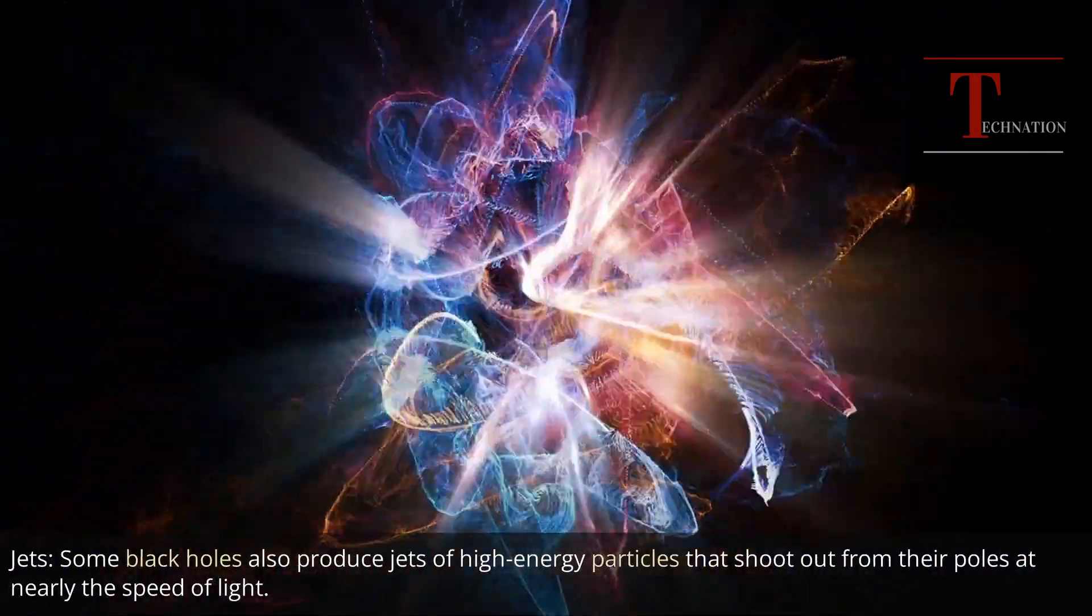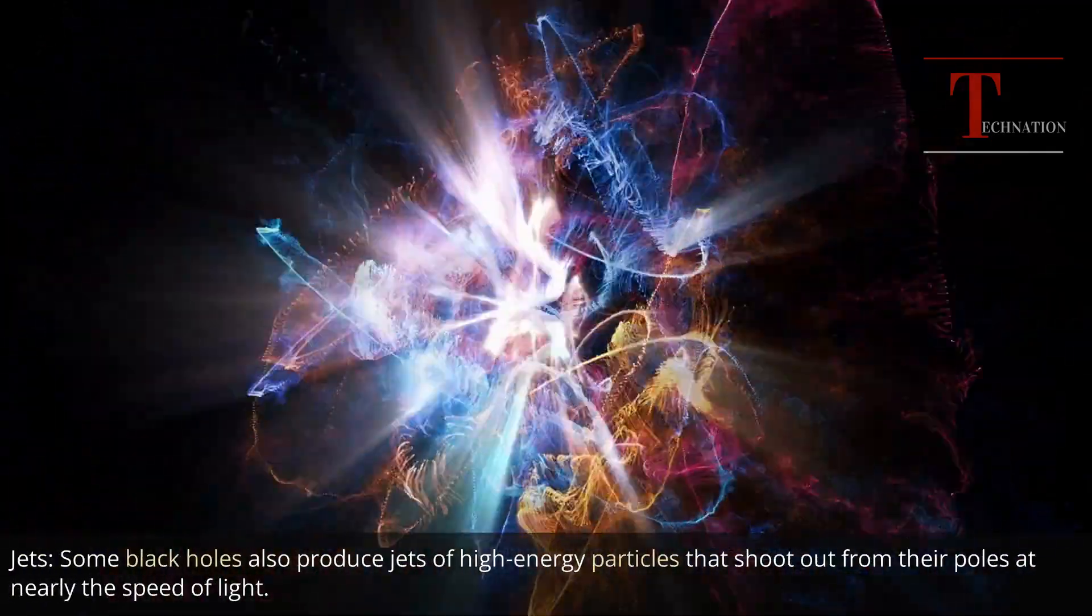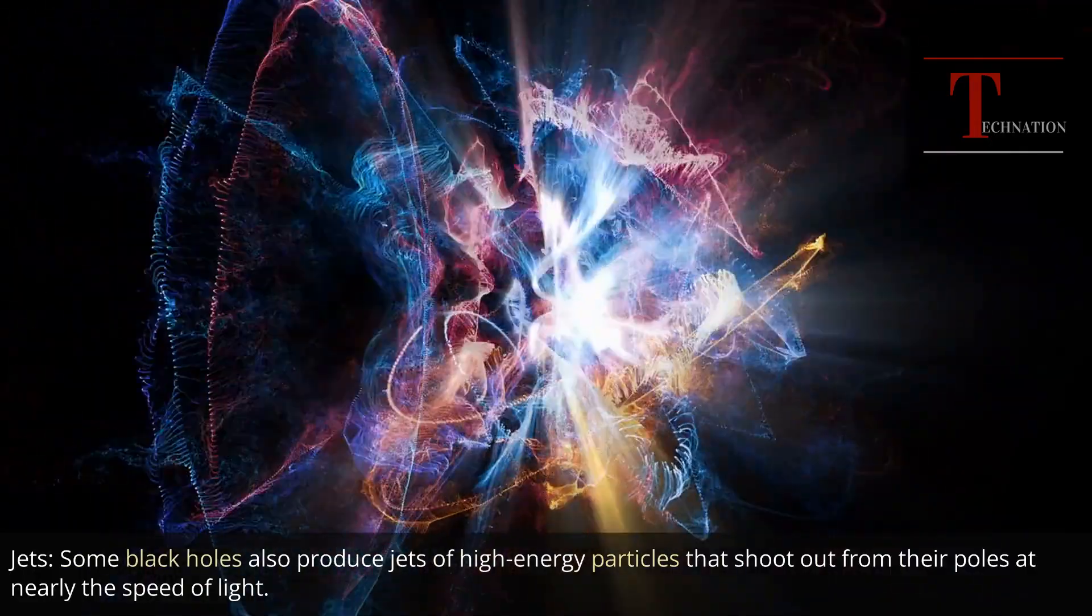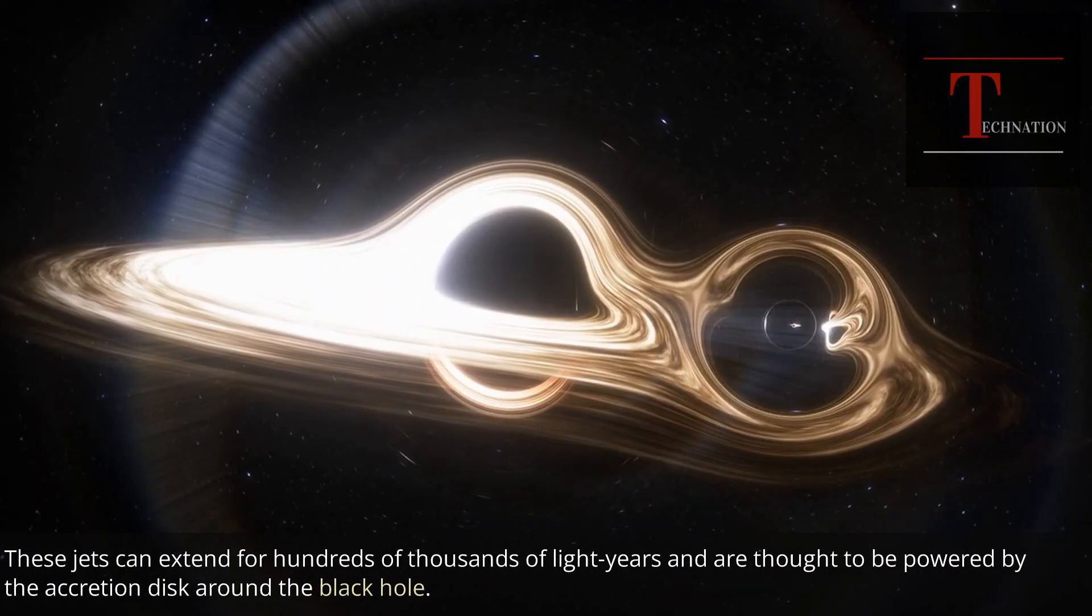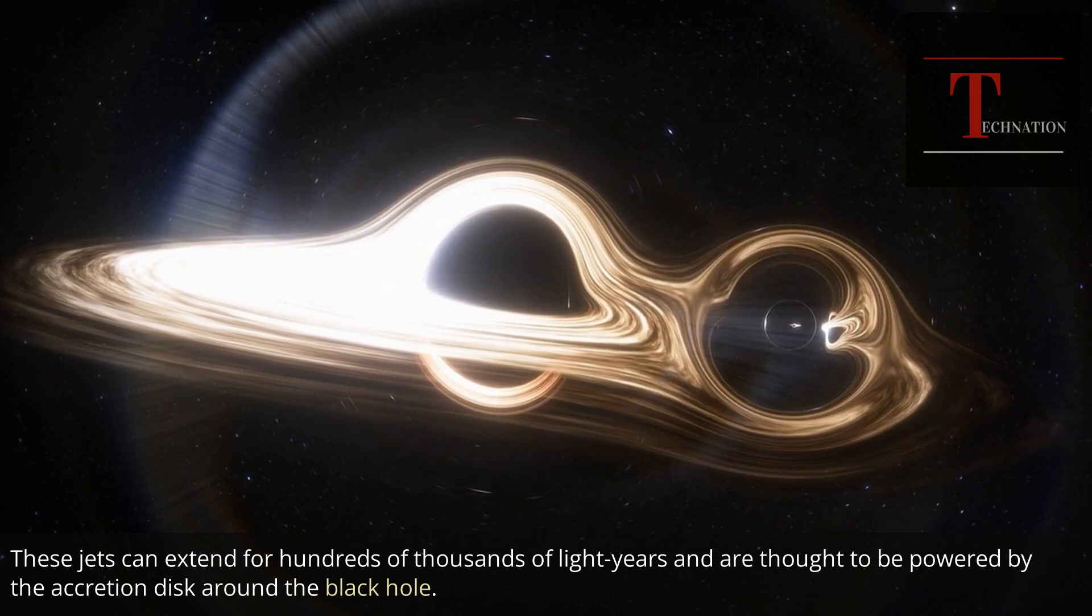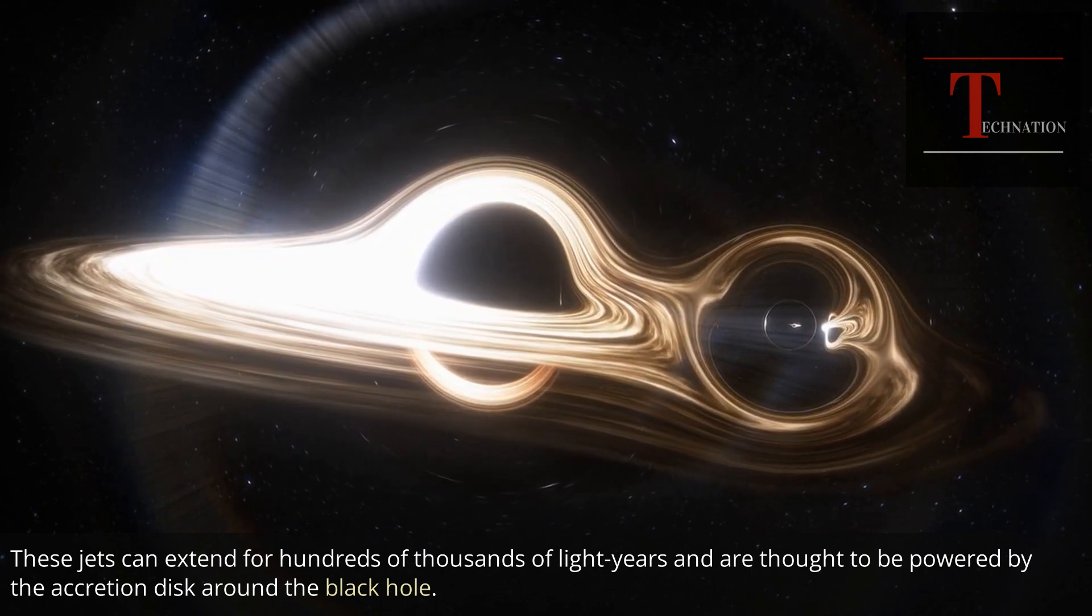Jets: some black holes also produce jets of high-energy particles that shoot out from their poles at nearly the speed of light. These jets can extend for hundreds of thousands of light years and are thought to be powered by the accretion disk around the black hole.